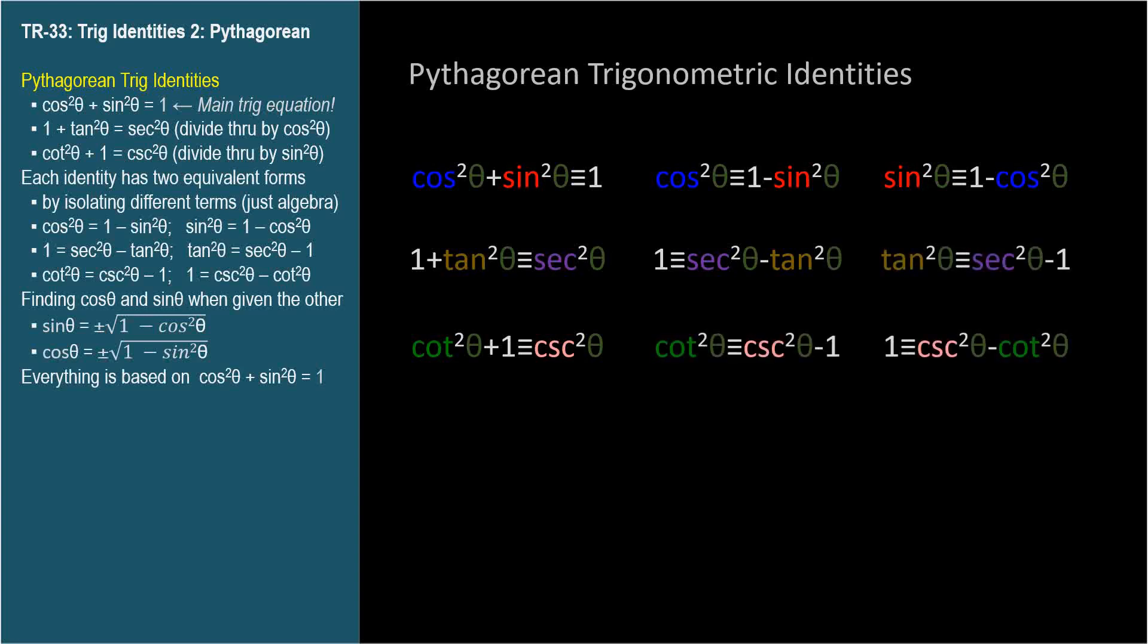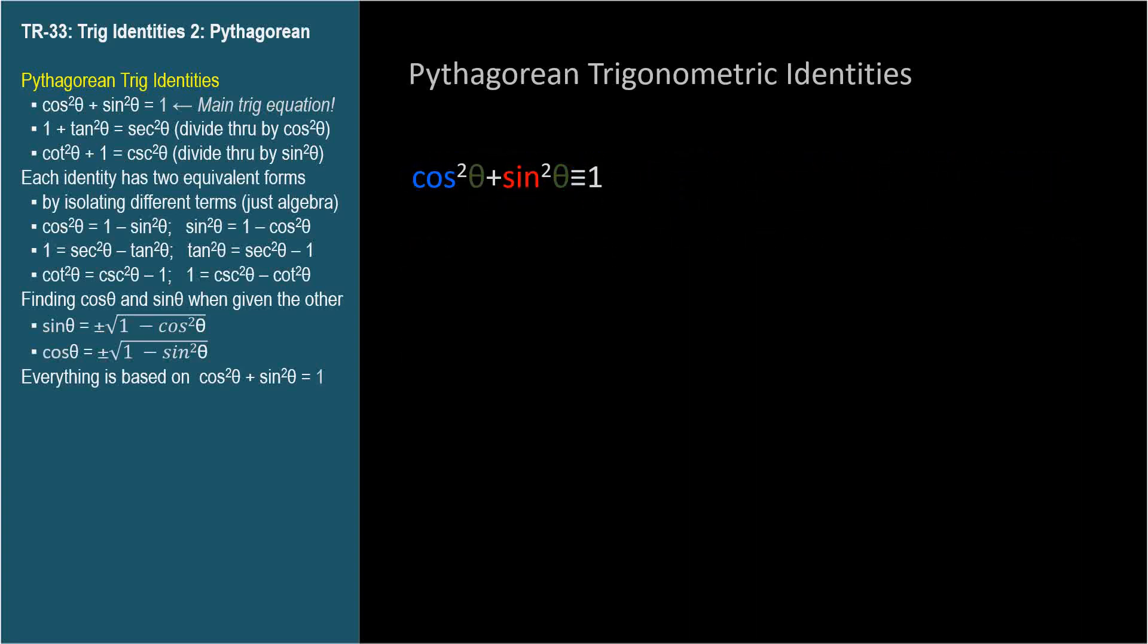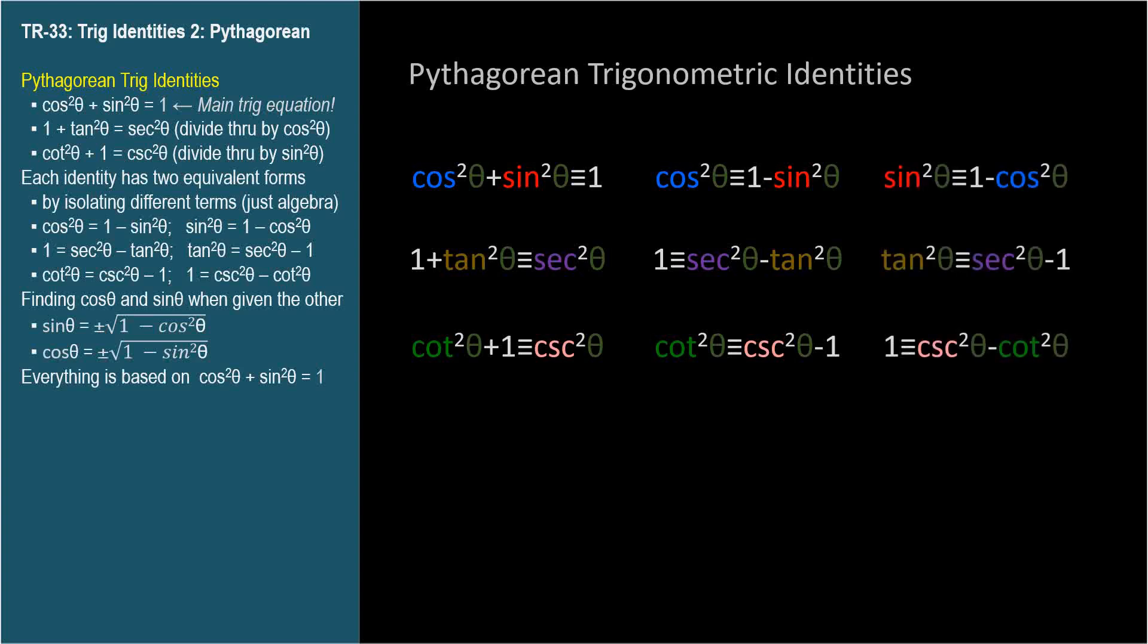And in all cases, we can substitute one side for the other in any equation or proof. This looks like a lot, but please remember this. We started with cosine squared theta plus sine squared theta equals 1, the most important equation in trigonometry, and one of the few things I suggest you commit to memory. We get the next two identities by dividing through by cosine squared and sine squared, and we get the other forms by isolating different terms. It's simple.